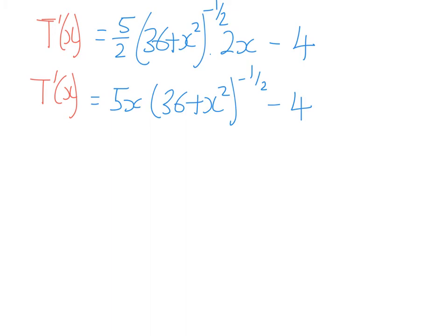It would be really useful at this point to write down a statement of some kind to show what you're going to do next. I'm going to write down T dashed X equals 0 for, or at, the minimum. So we know at that minimum value of X, T dashed X is going to be equal to 0. So let's make that equal to 0 then, and we'll try and solve it.